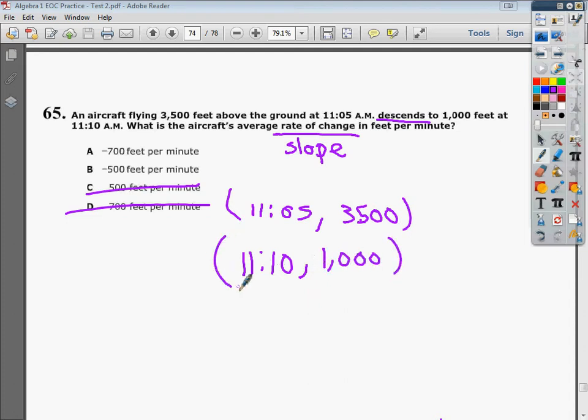The reason that I put the time in the front or as my x value in my little coordinates that I've made is that I'm trying to do an independent variable. Time is the ultimate independent variable in most cases. It's going to be 11:05 or 11:10, regardless of what the plane does.